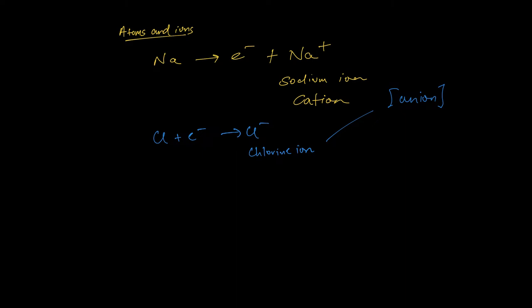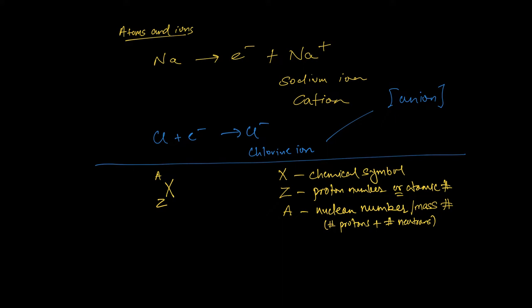We can use a standard notation to identify a particular atom of element X, where X is the chemical symbol from the periodic table. This kind of representation is called a nuclide. The element changes for every Z number — Z is the number of protons. If you have a different number of protons, you're changing the element, going from sodium to magnesium and so on. A nuclide is a name given to a class of atoms whose nuclei contain a specific number of protons and a specific number of neutrons.